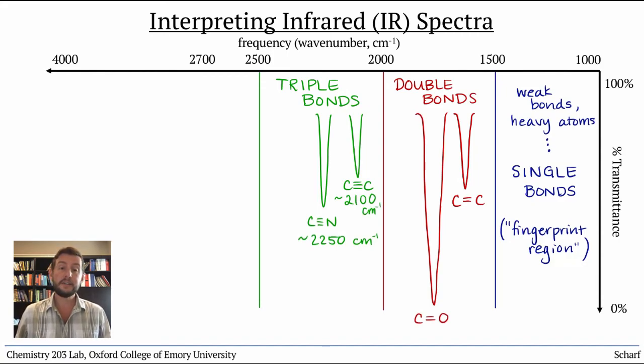The final important region of the spectrum is the highest frequency region, above 2700 wavenumbers. This region involves bonds to hydrogen, the lightest atom. We won't go into all the details of why certain peaks appear where they do, but for now it's sufficient to recognize the patterns.